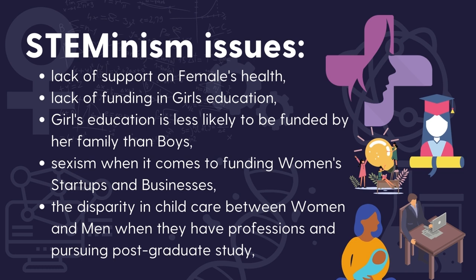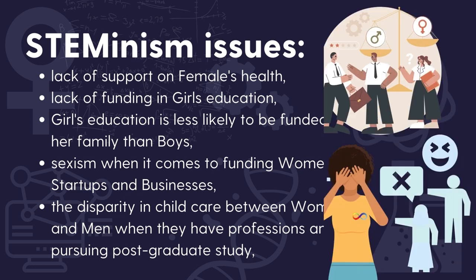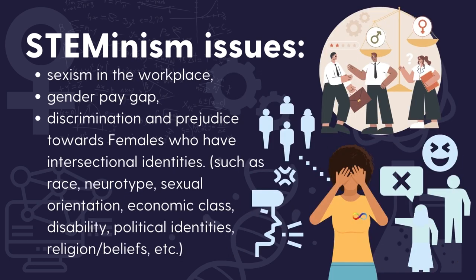Additional issues include lack of female STEM role models, lack of support on females' health, lack of funding in girls' education — where girls' education is less likely to be funded by their family than boys' — sexism in funding women's startups and businesses, disparity in childcare between women and men when pursuing professions and postgraduate study, sexism in the workplace, gender pay gap, and discrimination and prejudice towards females with intersectional identities such as race, neurotype, sexual orientation, economic class, disability, political identities, religion or beliefs, etc.